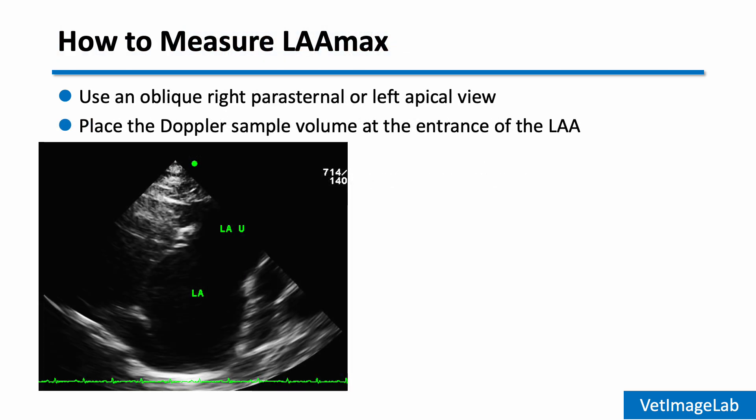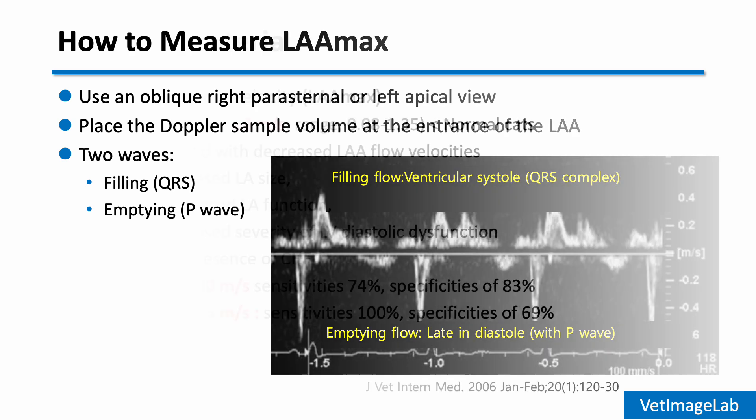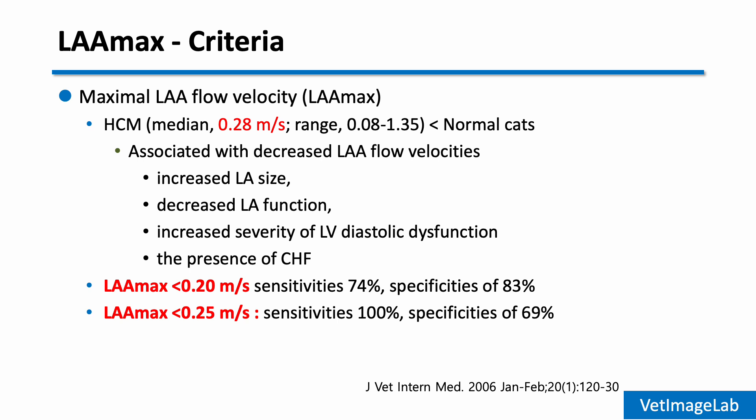Maximum velocity of the LAA is measured using pulsed wave Doppler at the entrance of the left auricle. You can use an oblique right parasternal or left apical view, depending on the cat's conformation and image quality. We typically observe two waves: one during ventricular systole and one during atrial contraction. A maximum LAA velocity less than 0.20 m/s is highly specific for the presence of spontaneous echo contrast or thrombus. A threshold of 0.25 m/s is more sensitive.